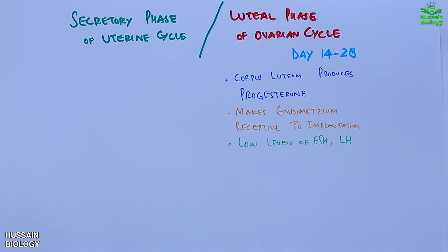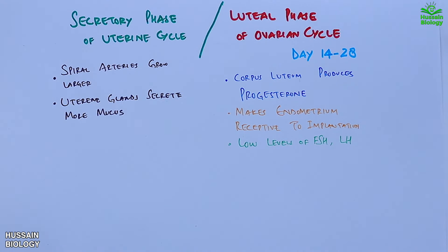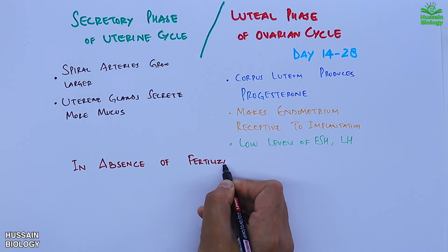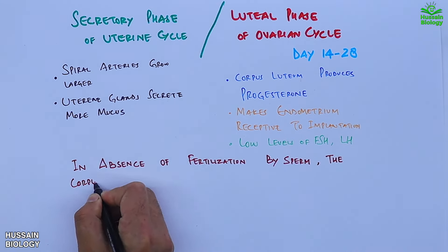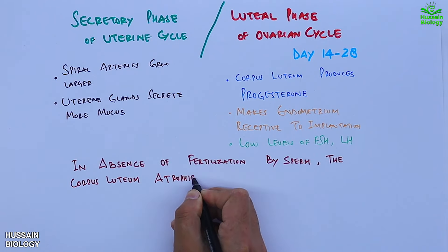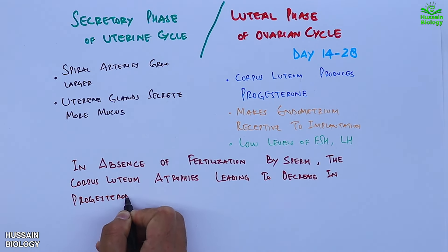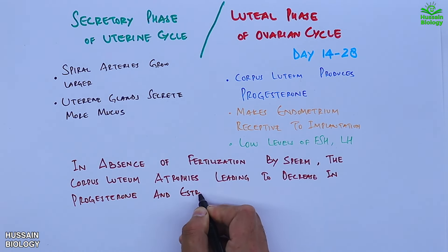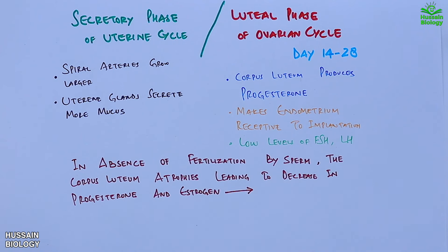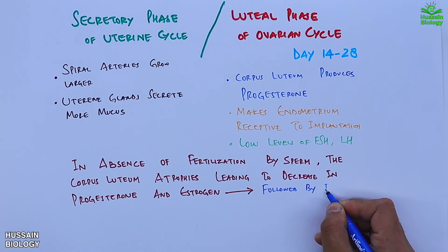In the secretory phase, the spiral arteries grow larger and uterine glands secrete more mucus. If fertilization does occur, the cycle ceases after pregnancy. In the absence of fertilization, the corpus luteum atrophies, leading to a decrease in progesterone and estrogen levels, followed by an increase in FSH and LH concentrations.